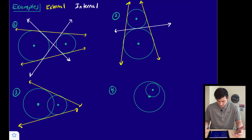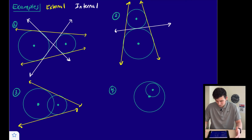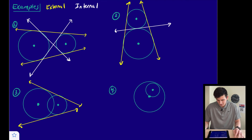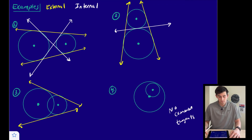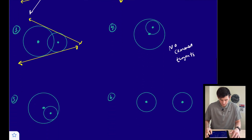For number four, there are no points of intersection, so we cannot draw any tangents. There are no common tangents for number four because those circles are not intersecting.